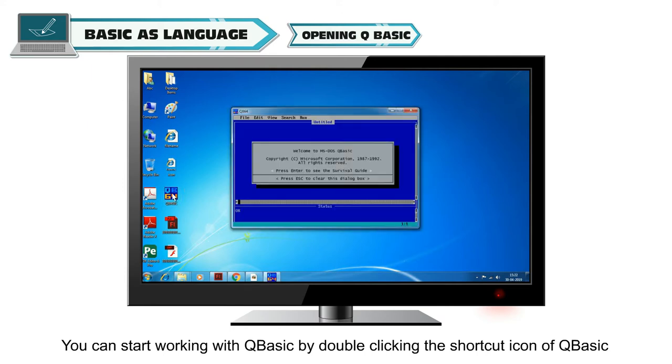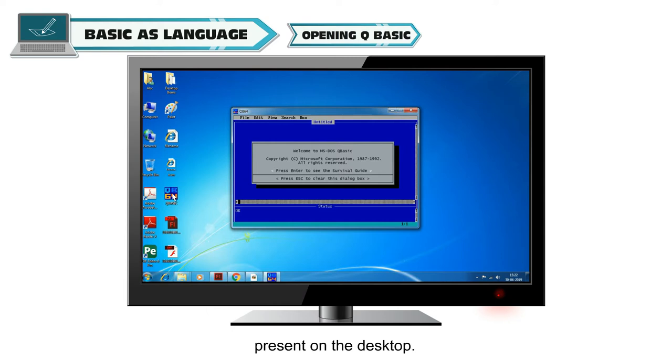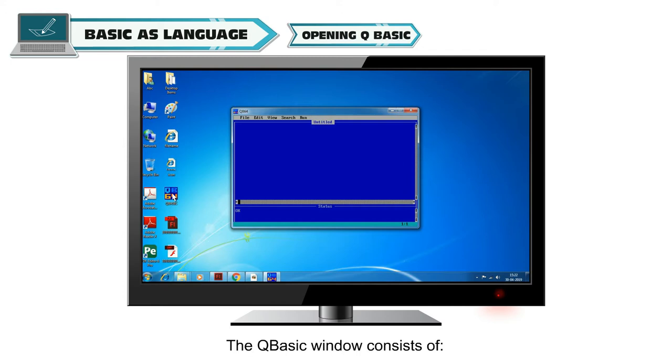Opening QBASIC: Steps to open QBASIC. You can start working with QBASIC by double-clicking the shortcut icon of QBASIC present on the desktop. Components of QBASIC window: The QBASIC window consists of Program Name, Menu Bar, Vertical Scroll Bar, Program Area, Status Bar, Horizontal Scroll Bar.